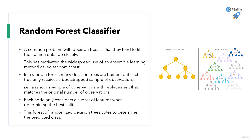Each node only considers a subset of features when determining the best classifier. This forest of randomized decision trees votes to determine the predicted classes.